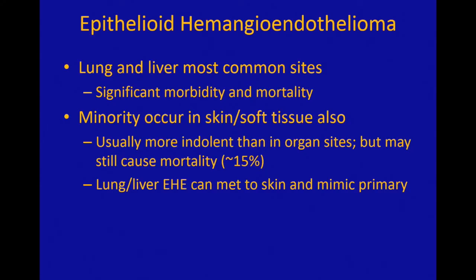A minority of cases, maybe 10% or so, will occur in the skin and soft tissue. In that setting they tend to be much more indolent and well-behaved than the organ-based EHEs, but they may still cause mortality. Some of those skin and soft tissue epithelioid hemangioendotheliomas will metastasize and kill the patient.